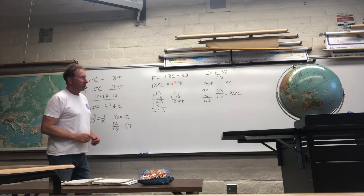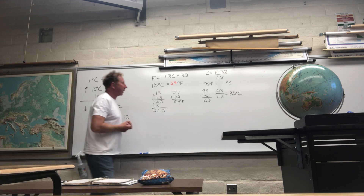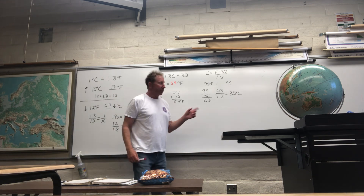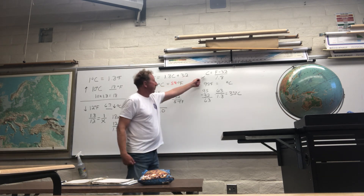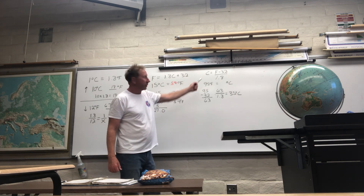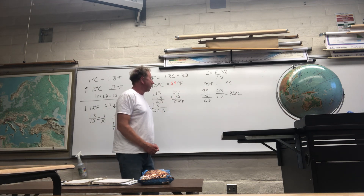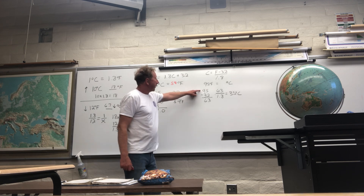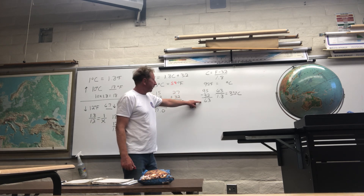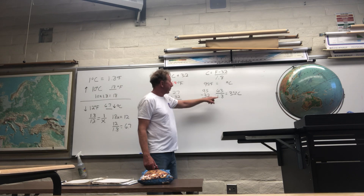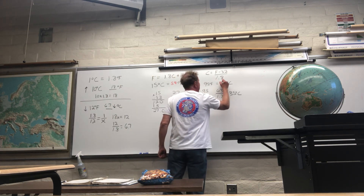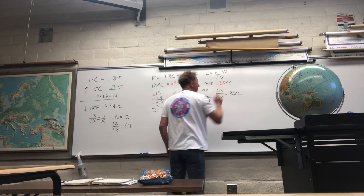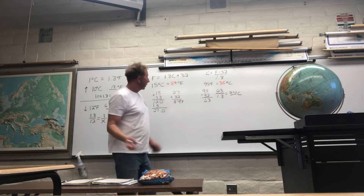On number two, 2A, I believe that one is asking: 95 degrees Fahrenheit — what would that be on the Celsius scale? This is the formula: Celsius equals Fahrenheit minus 32 divided by 1.8. So 95 minus 32 is 63. And then you divide it by 1.8. And the answer is 35. So when you guys do these, please show your work.